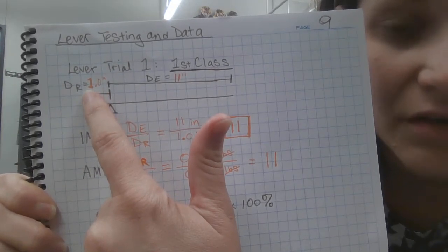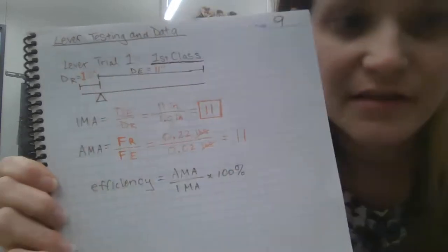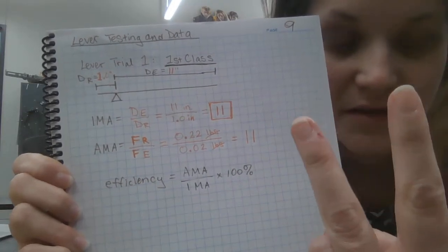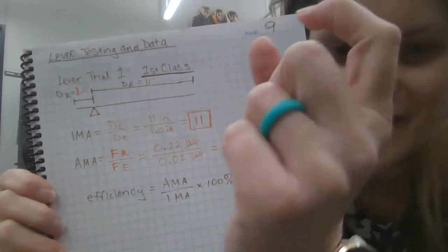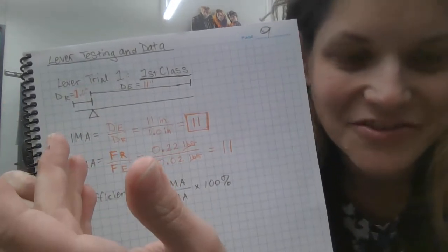So I went ahead and called it 1.0 inches so that can have two significant figures because it was right on the money. I think those are designed so that every two spaces is exactly an inch, makes sense.